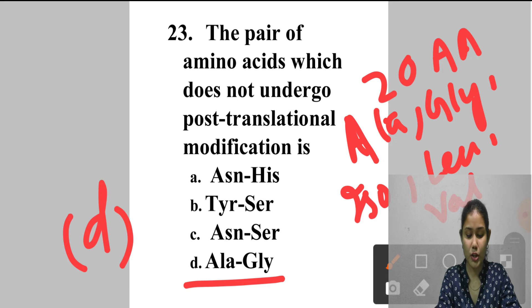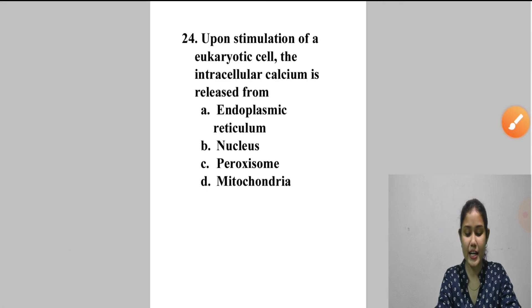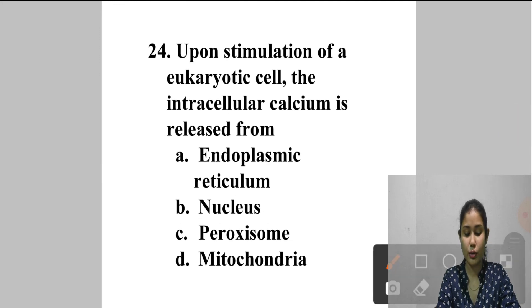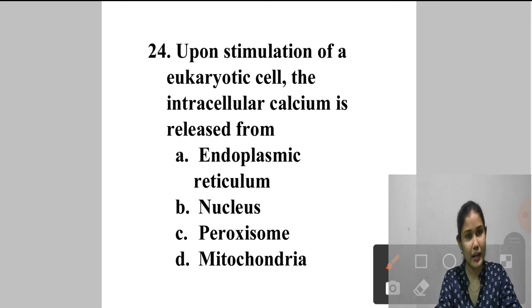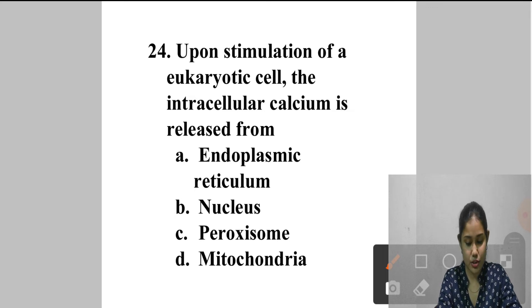Question 24: Upon stimulation of a eukaryotic cell, intracellular calcium is released from — A. Endoplasmic reticulum, B. Nucleus, C. Peroxysome, D. Mitochondria. On activation of signaling, there is a temporary increase in intracellular calcium concentration through opening of calcium channels in the plasma membrane of the endoplasmic reticulum. Prolonged elevation can lead to apoptosis. Answer is option A — endoplasmic reticulum.